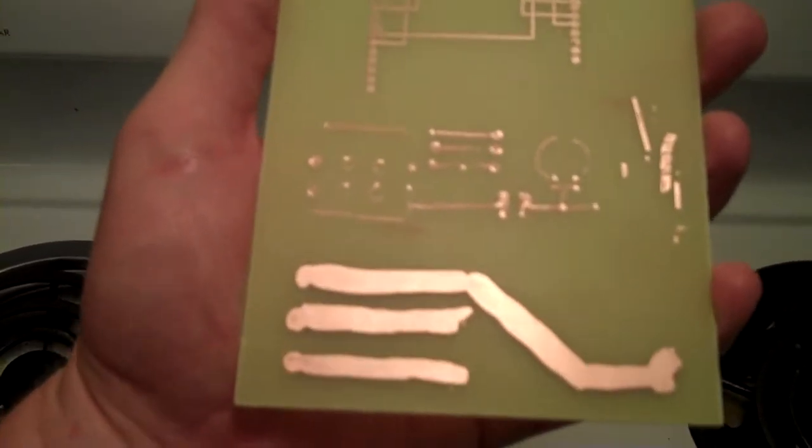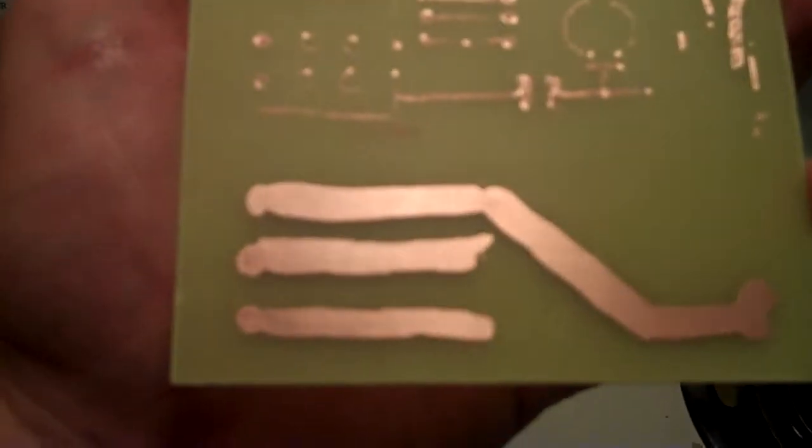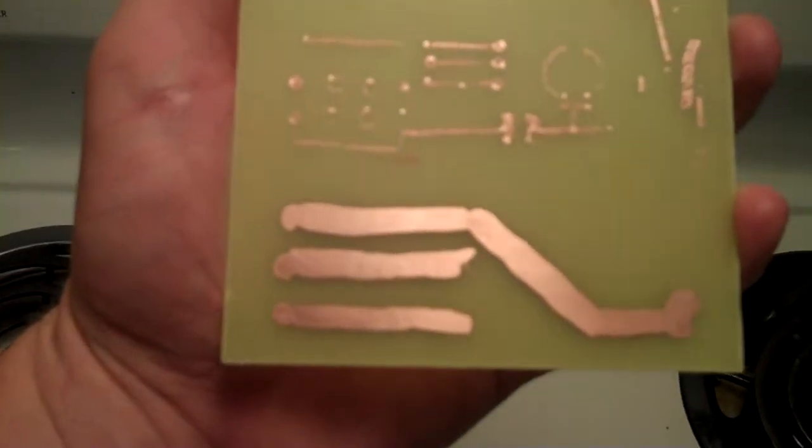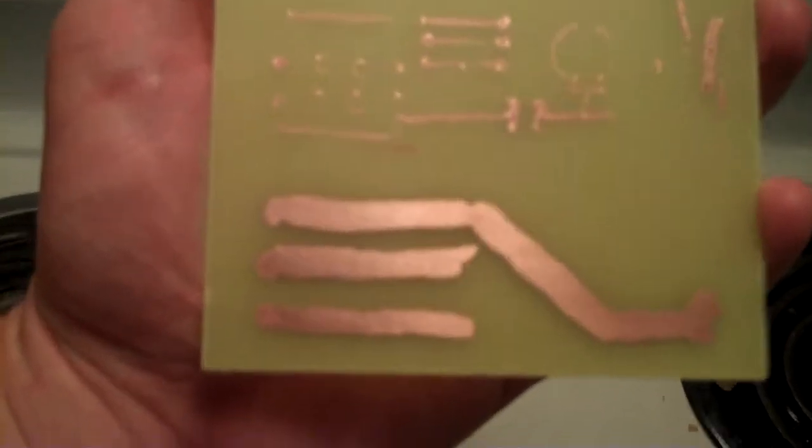After much scrubbing with the Brillo pad and alcohol, you can see that the big fat lines where I had the nail polish came out just fine.